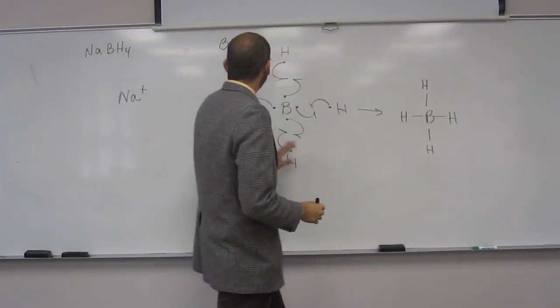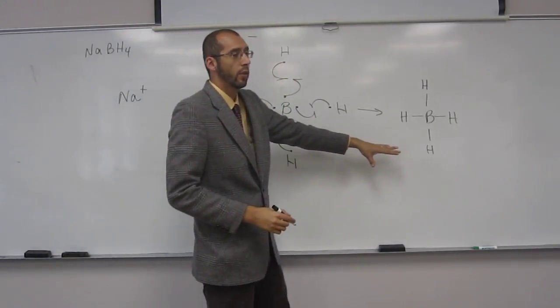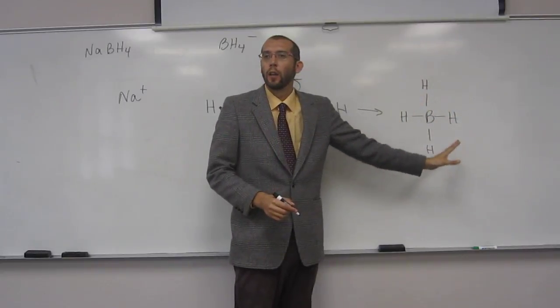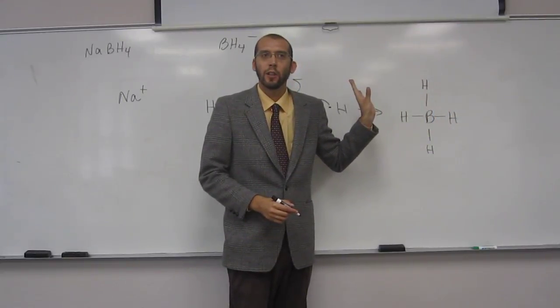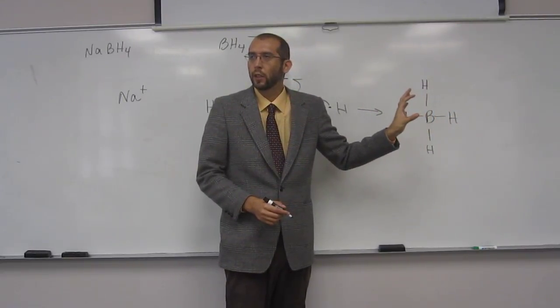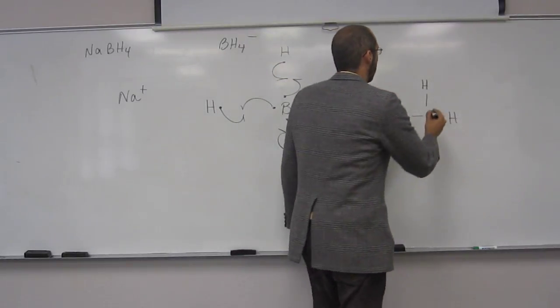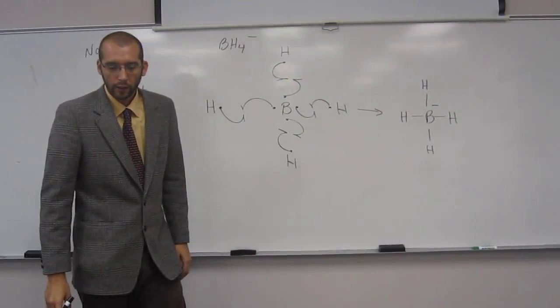So, it says that we've got a negative charge. Where is that negative charge going to be located? On the boron. Should we do the formal charge calculation, or are you guys pretty good with looking at them now? Good. So that's what it's going to look like.